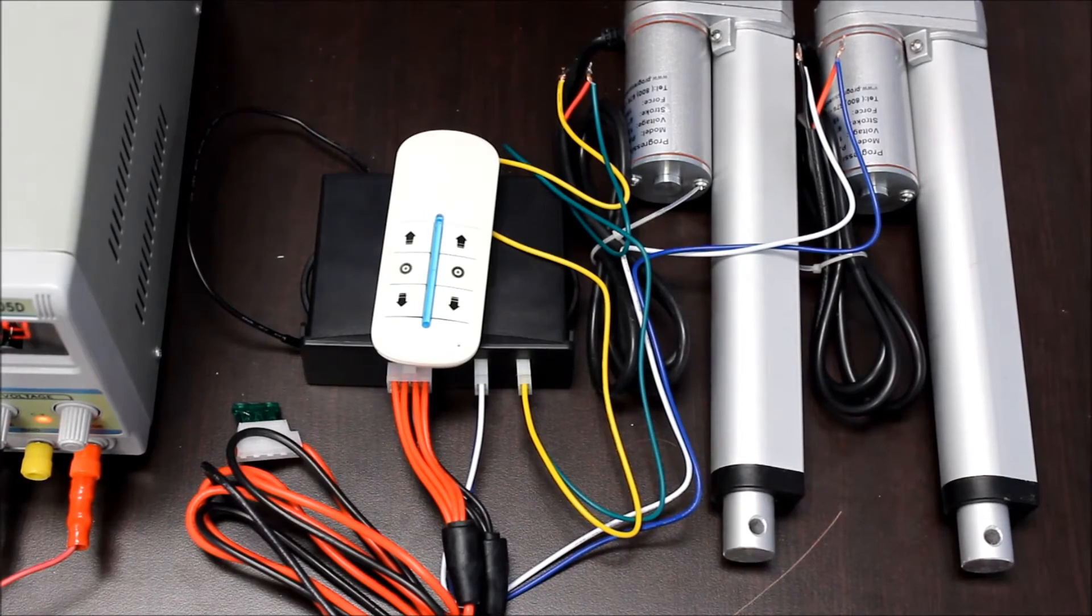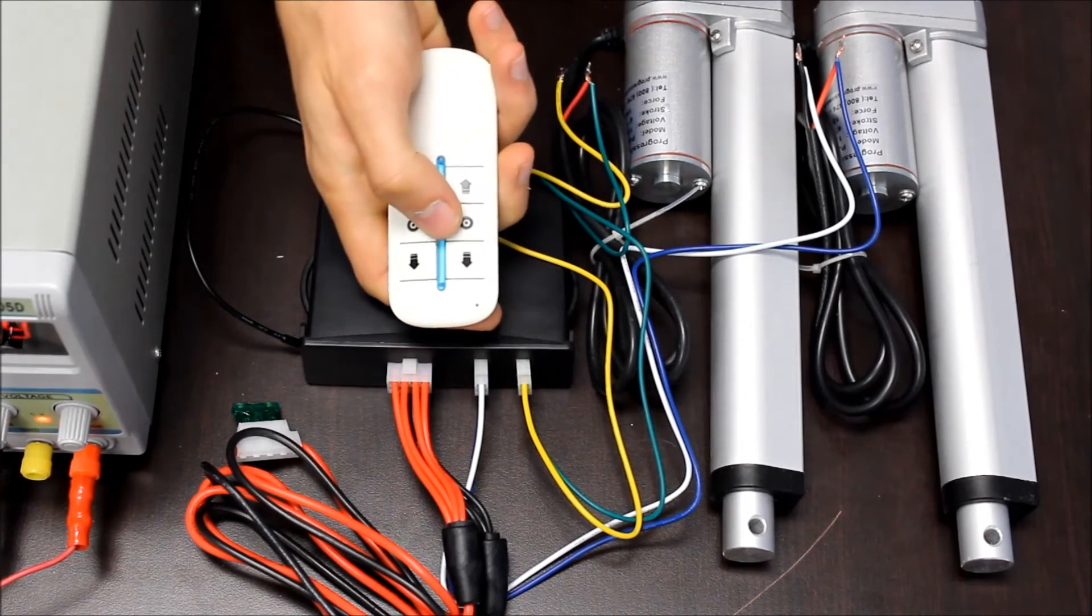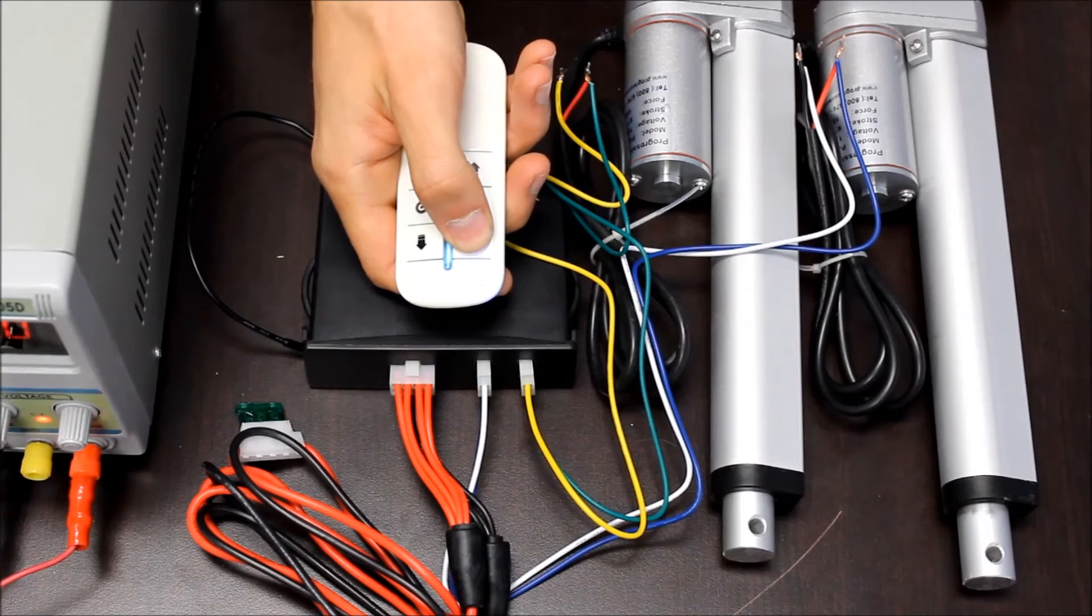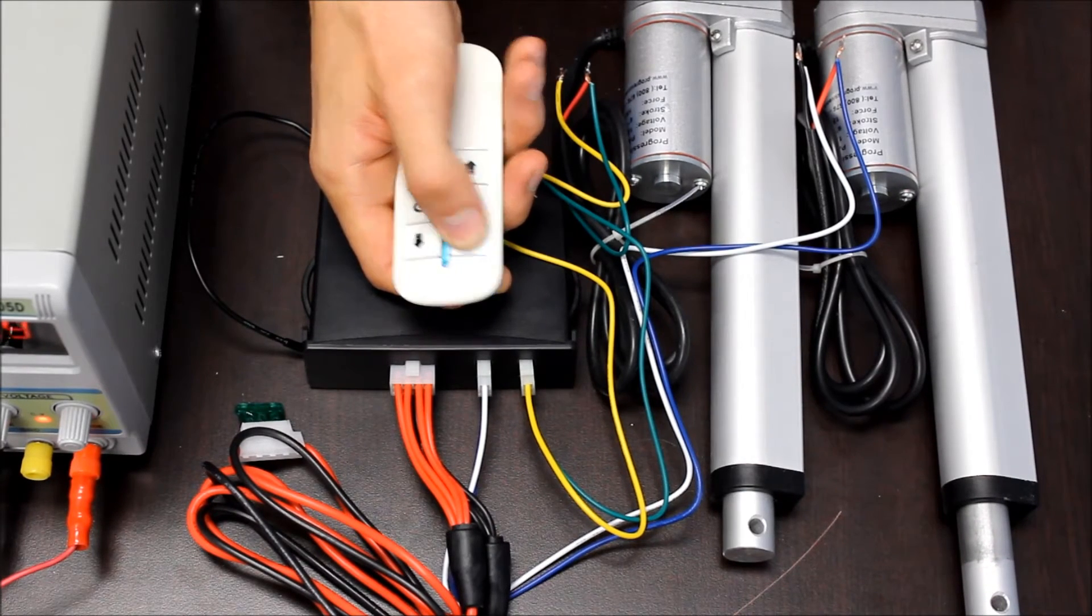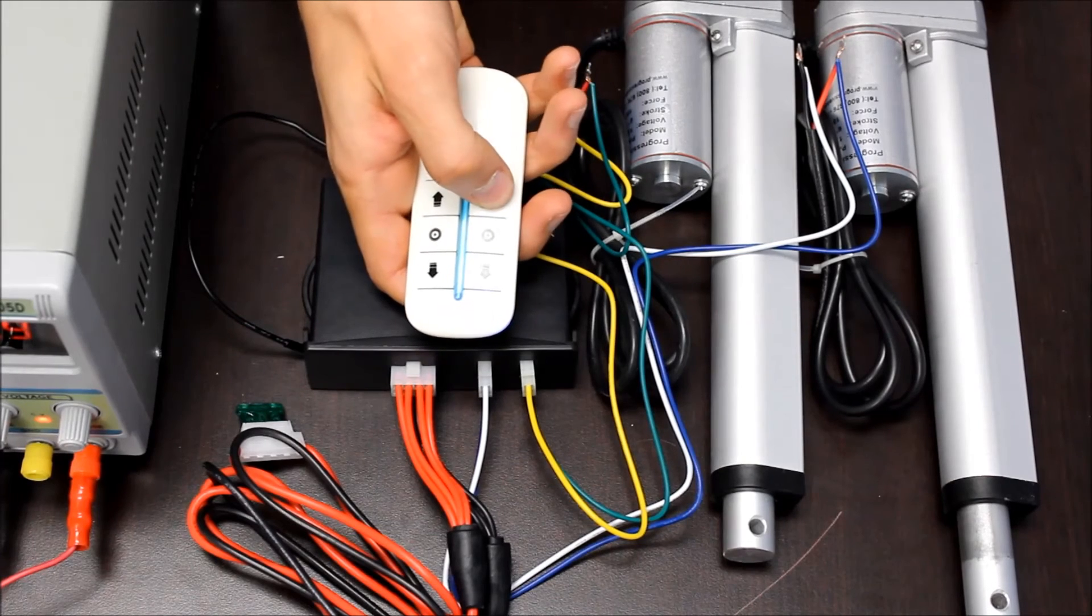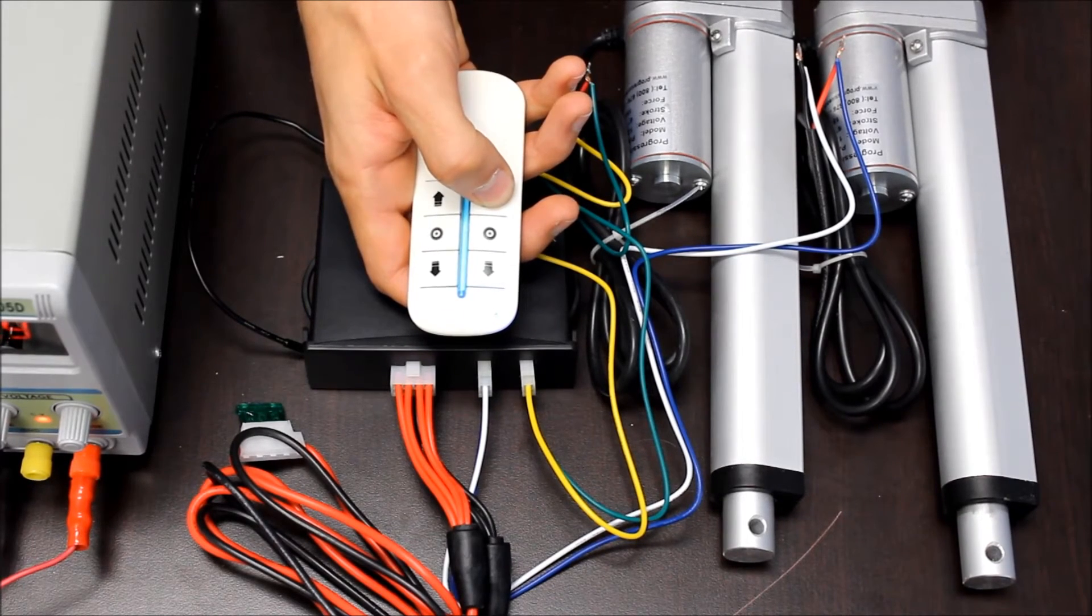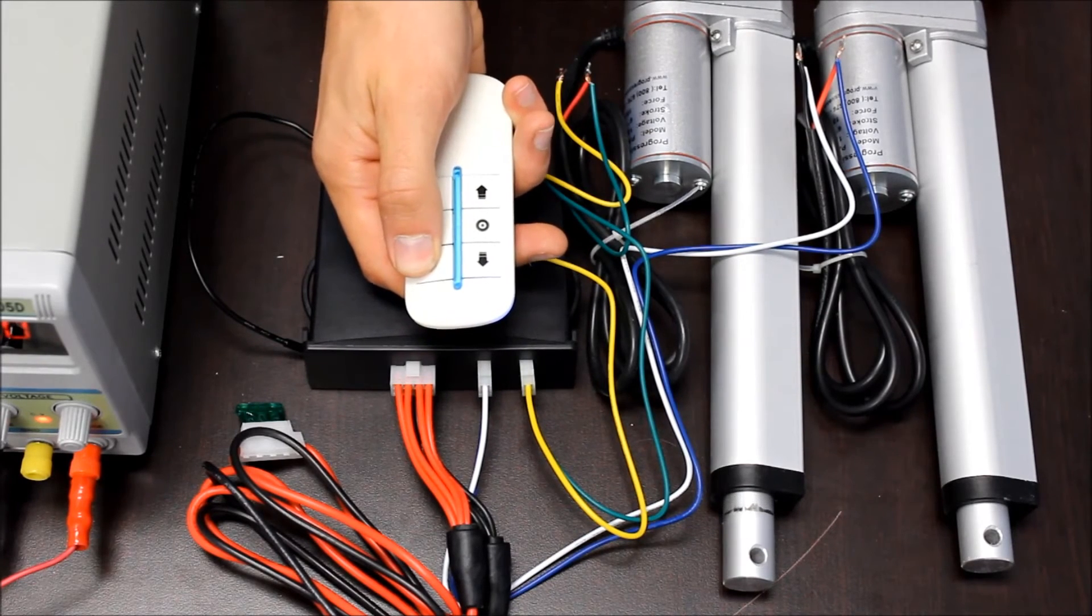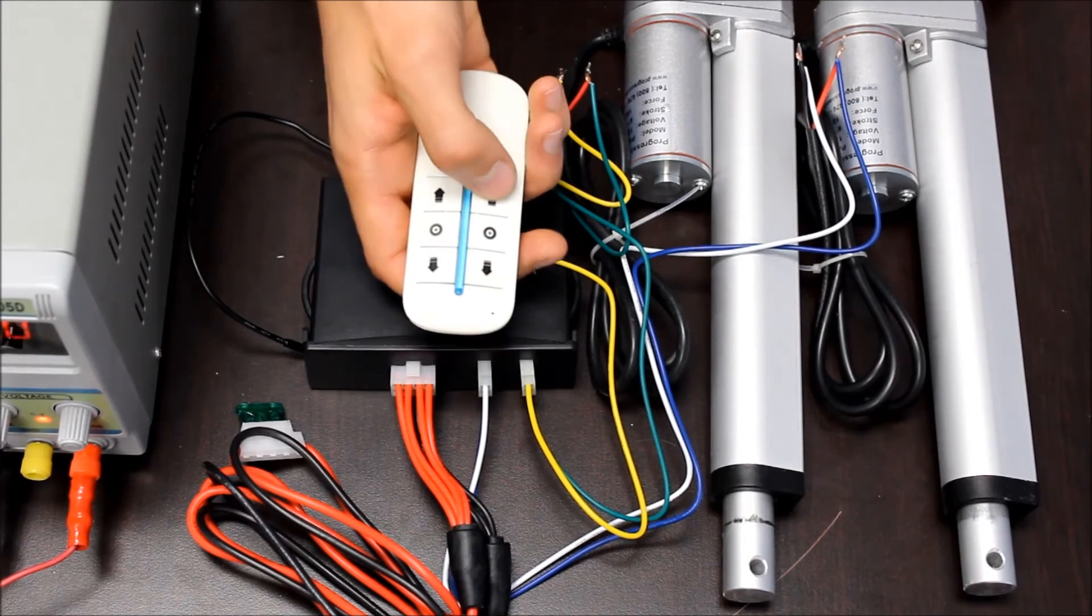Now that we've changed the settings to momentary control, the buttons on the remote act differently. Now when you hold the button, the actuator will move, and as soon as you let go it'll stop. Same for reverse. The middle buttons now don't do anything. You still have independent control of either actuator.